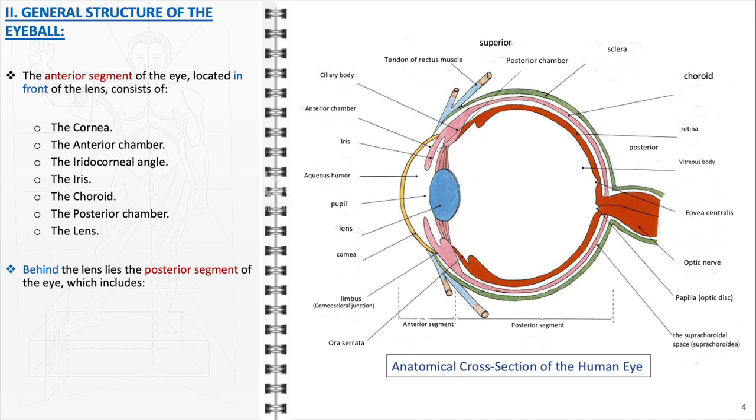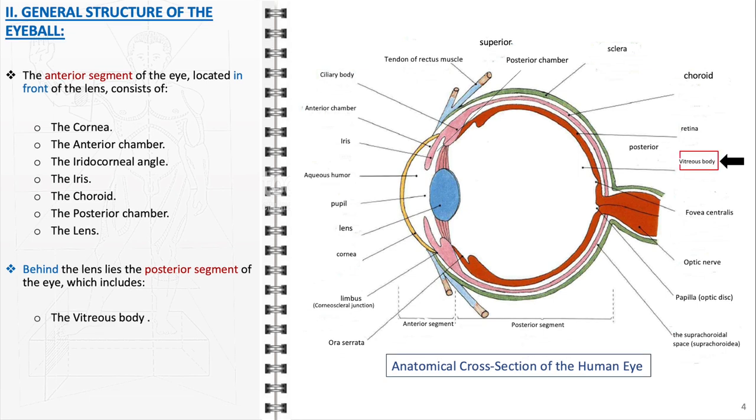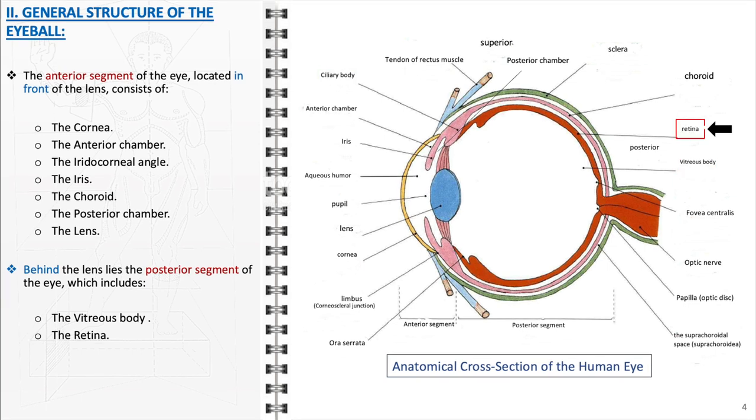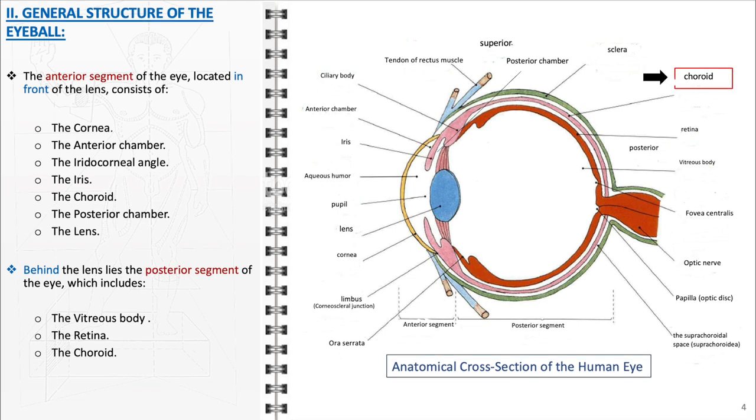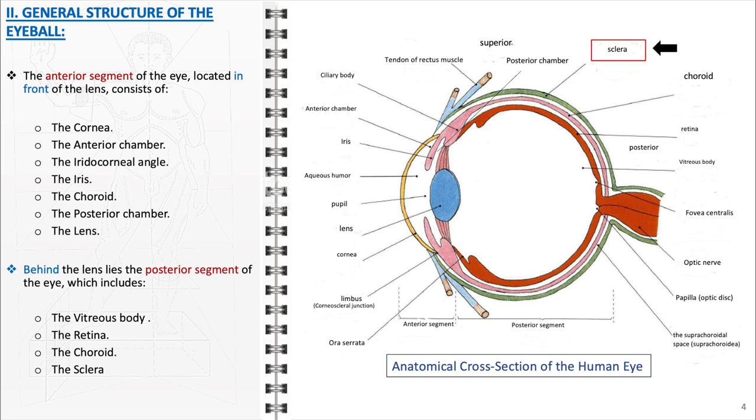Behind the lens is the posterior segment, containing the vitreous body, a gel-like substance that fills the large space at the back of the eye. The retina, the light-sensitive tissue layer, captures visual information. The choroid, continuing posteriorly, supports the retina, and the sclera, the eye's external protective layer, maintains its shape. Each part of the eye's structure is vital for its function, and disruptions to these components can lead to visual impairment.